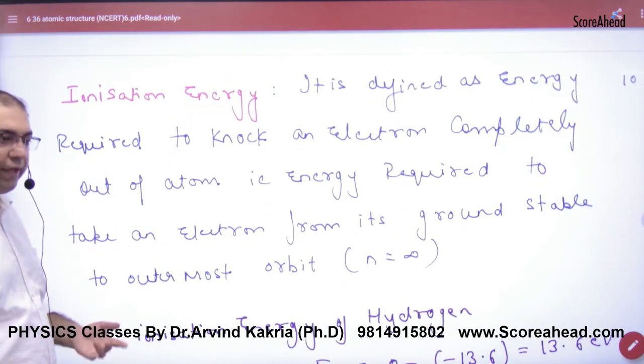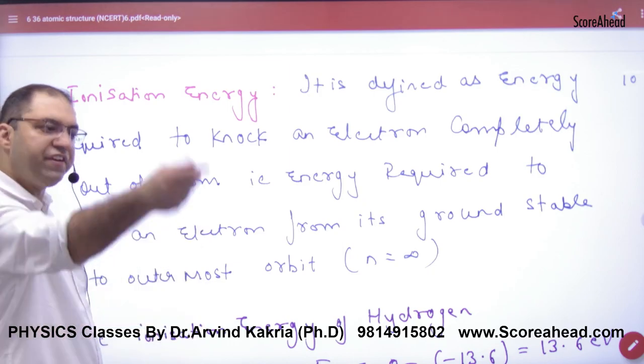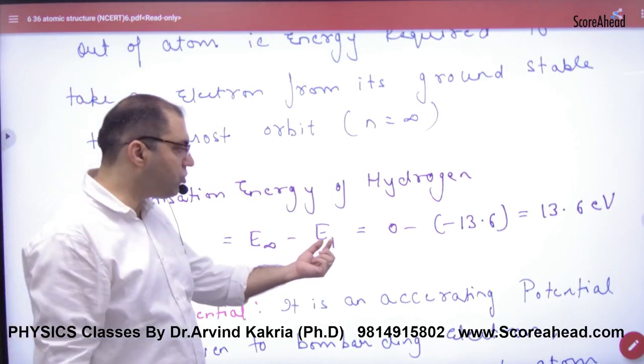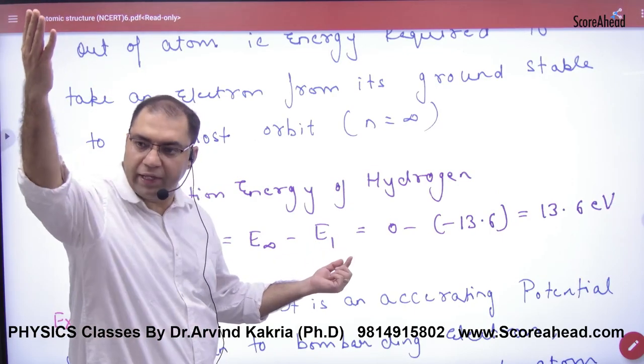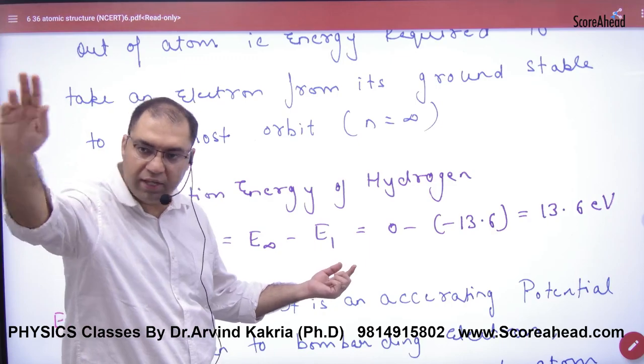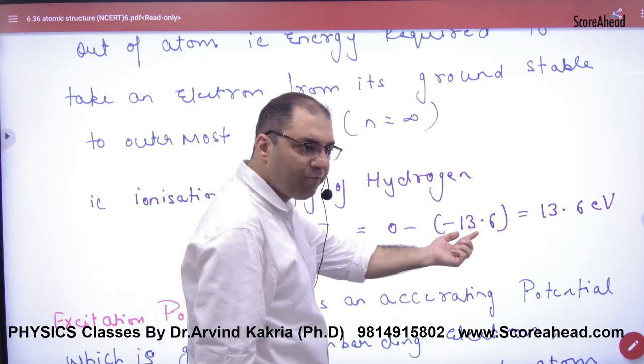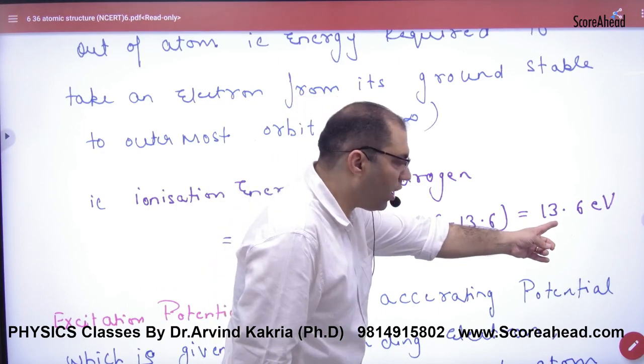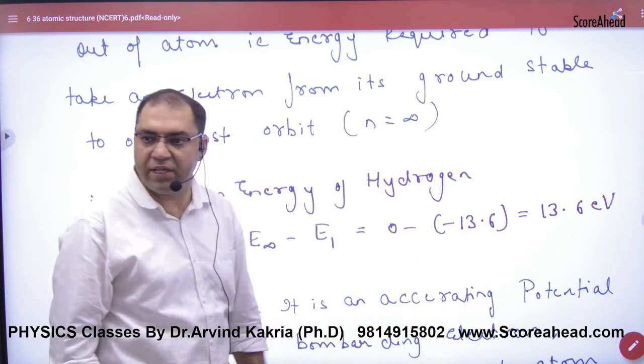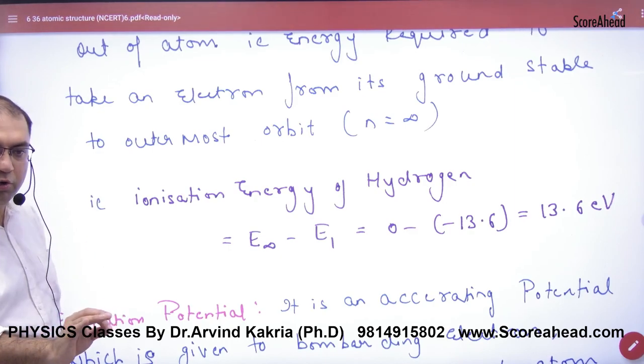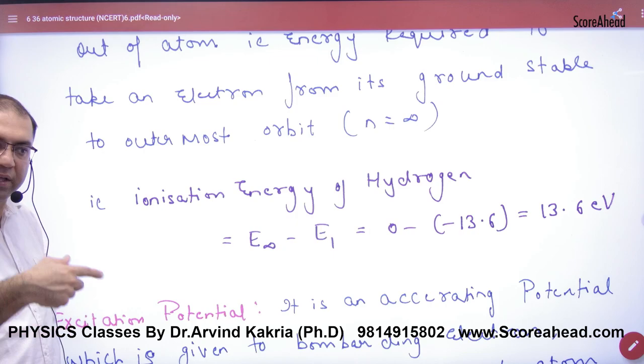Ionization energy - what is ionization energy? You can take an electron from any shell to infinity. Infinity means final state is infinity and initial state is n=1. Exciting from n=1 shell to infinity. Energy at infinity is zero, and at n=1 it's -13.6 eV. So the ionization energy is 13.6 electron volts from the n=1 shell to infinity.